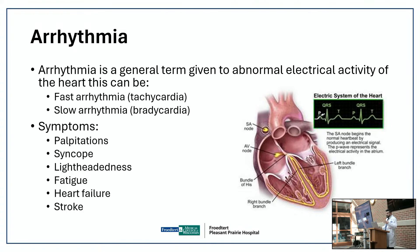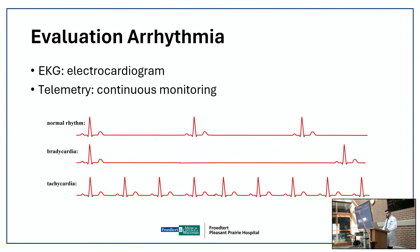Symptoms of serious arrhythmias include palpitations, passing out, lightheadedness, fatigue, heart failure, and stroke. Normal heart rate is between 60 and 100. Certain arrhythmias cause strokes — like atrial fibrillation. The first step is an EKG to see the rhythm. A normal sinus rhythm is regular; bradycardia is slow with big pauses; tachycardia is fast with too many beats. We treat each differently.